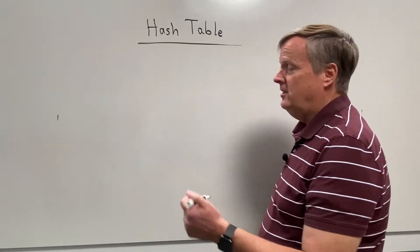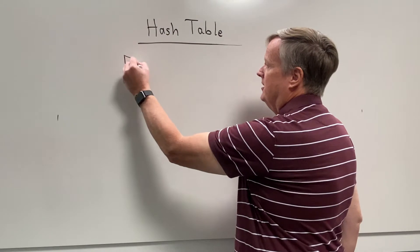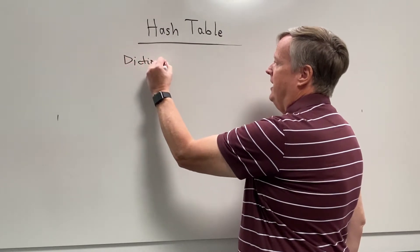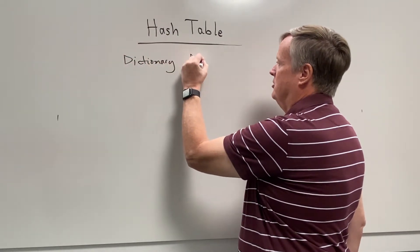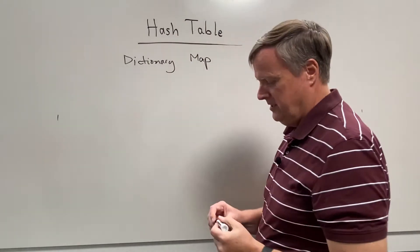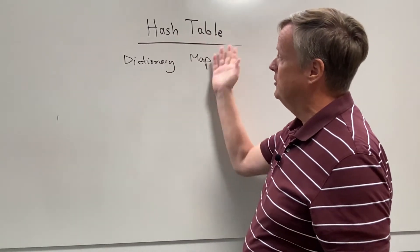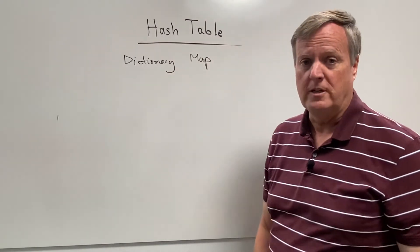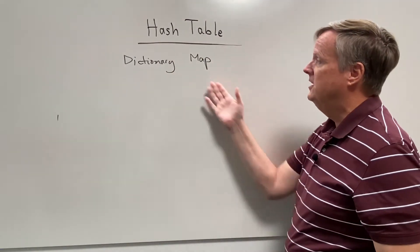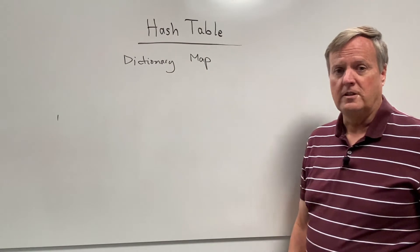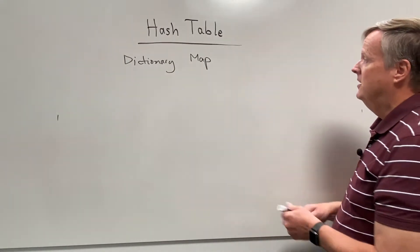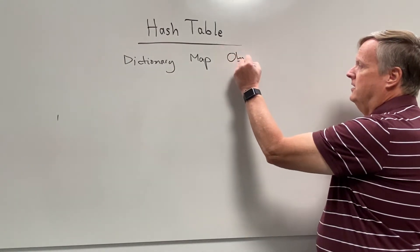Hash tables are also often referred to as a dictionary or a map. In JavaScript, they basically use a specialized form of a hash table in order to implement objects and object properties. So these are all the various different ways that you might hear about hash tables.